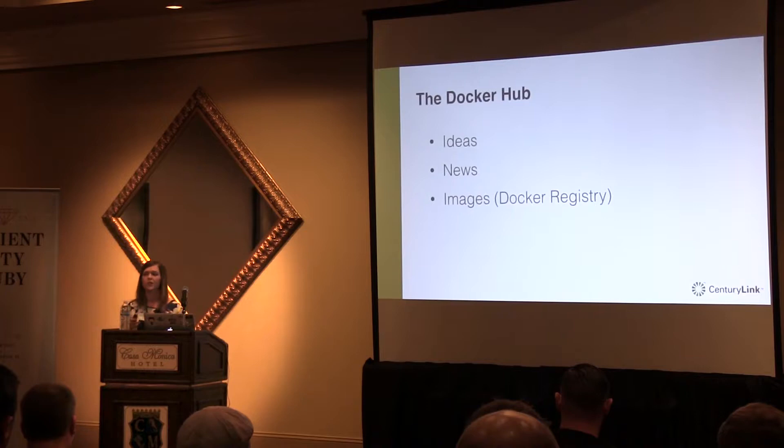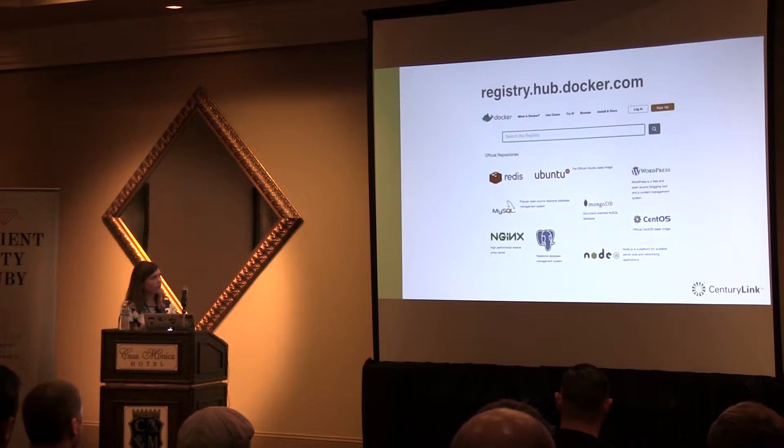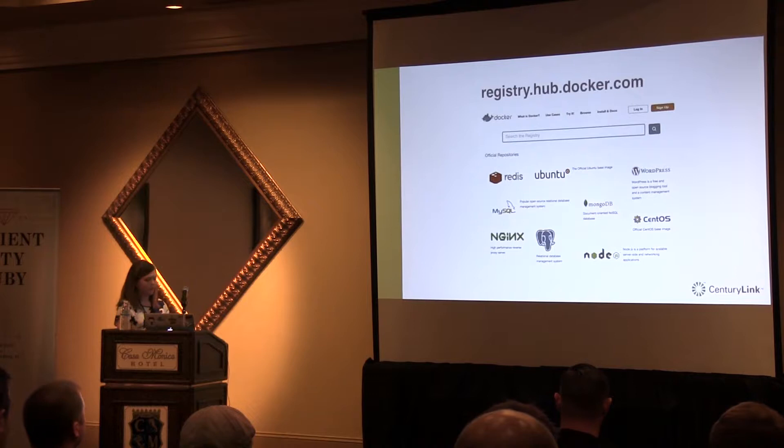Every container starts with an image. If you think of an image as a class and the container as an instance of the class, it's kind of the same relationship. Images live in a thing called a registry, and Docker has a public registry. A registry is very similar to GitHub — there's tight coupling between your GitHub account and the registry.